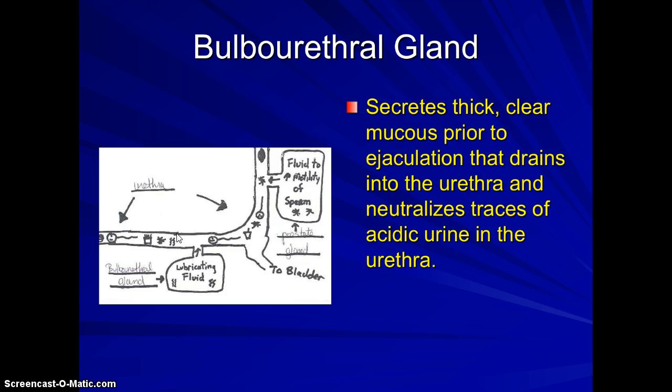The last accessory organ is the bulbourethral gland. It secretes a mucus prior to ejaculation that passes through the urethra. Since urine also travels through the urethra and can make it acidic — a poor environment for sperm — this mucus works to neutralize the urethra to increase the number of sperm that survive the trip.